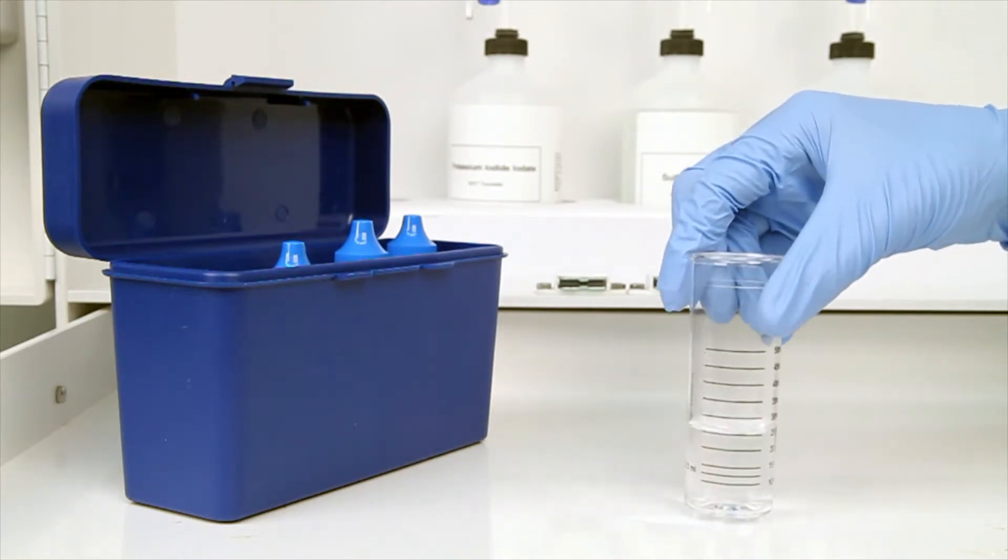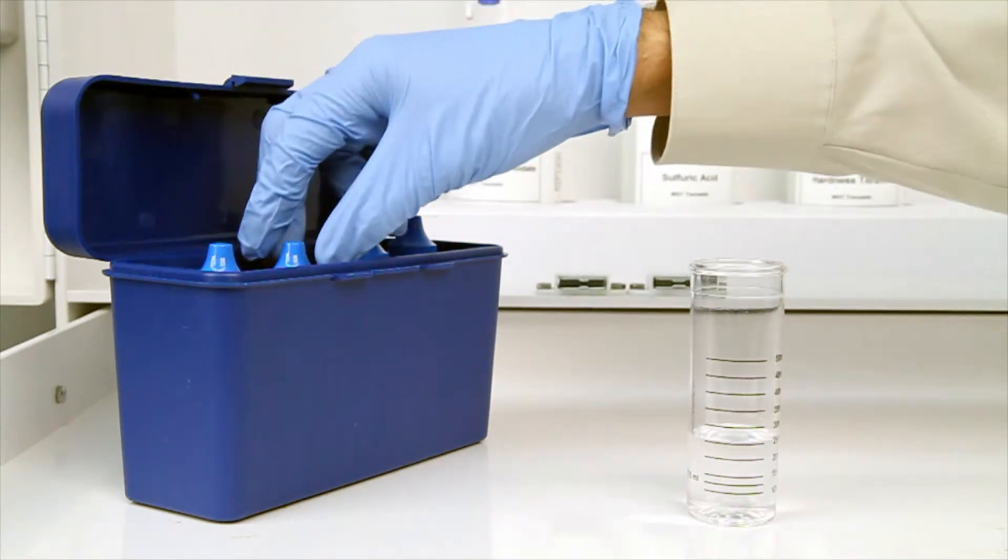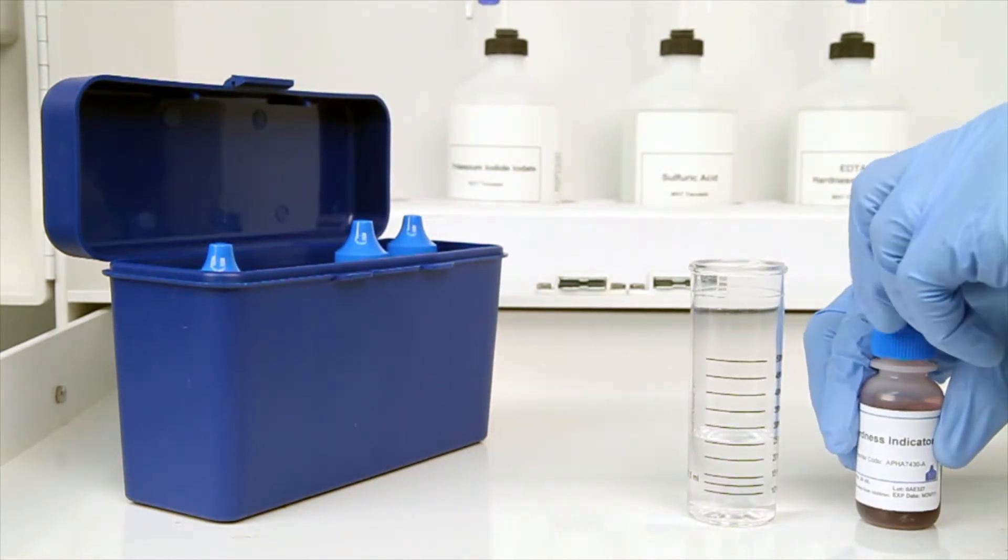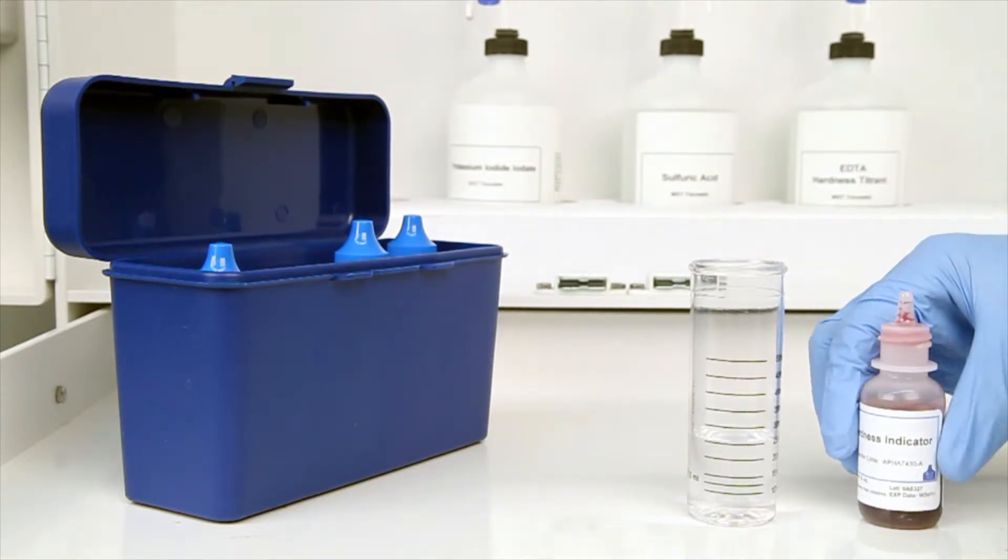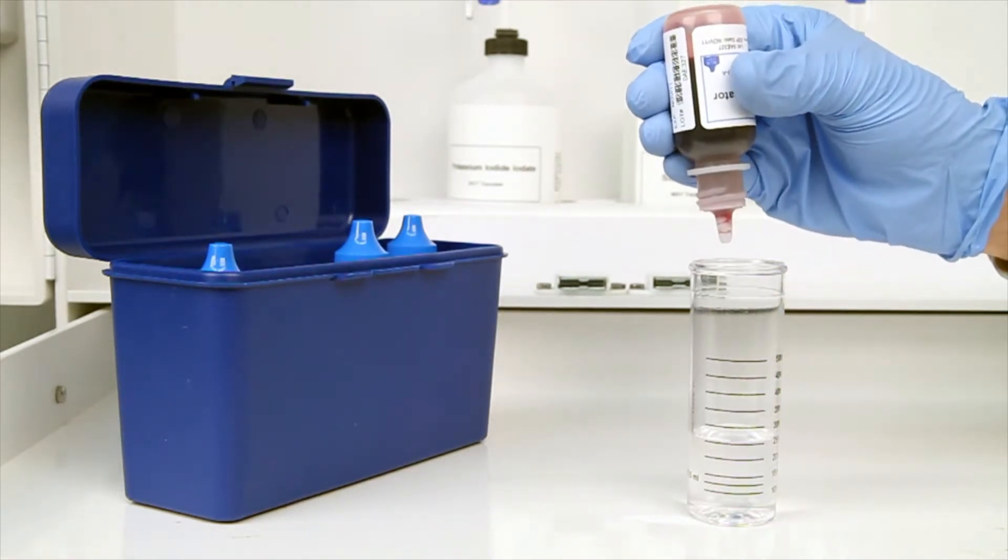The next step according to the Endpoint ID procedure is to add five drops of hardness indicator. Be sure to hold the bottle vertically to get a consistent drop size. Remember to swirl the vial after the addition of each reagent.